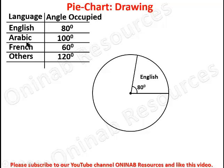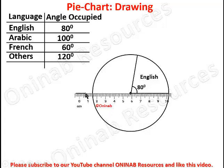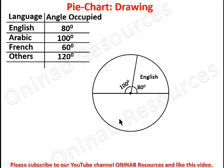We now draw the sector for 100 degrees, which represents Arabic. We place the protractor again — this is now our line of reference. The zero line of the protractor must cover this line, and the center is maintained. We look for 100 degrees, mark it out, remove the protractor, place the ruler, and join. This angle of 100 degrees represents the students speaking Arabic.